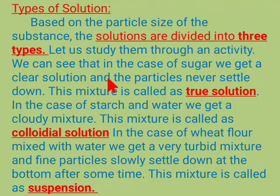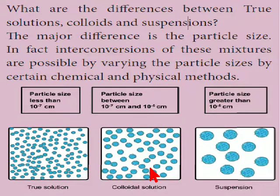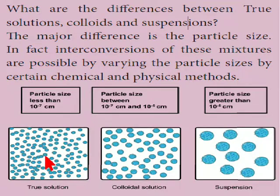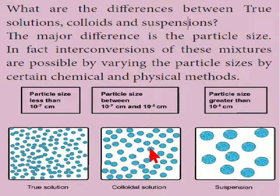These are the types of solution: true solution, colloidal solution, and suspension. The differences based on particle size: in true solution, particle size is less than 10⁻⁷ cm; in colloidal solution, it is 10⁻⁷ to 10⁻⁵ cm; and in suspension, particle size is greater than 10⁻⁵ cm.